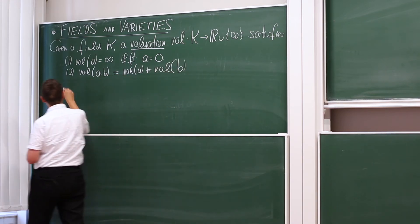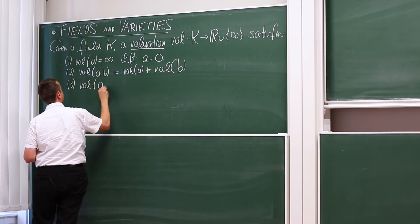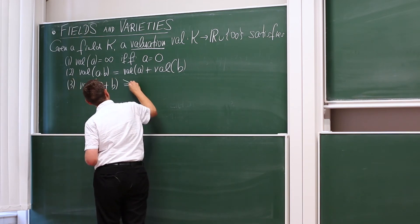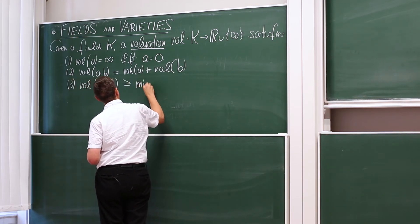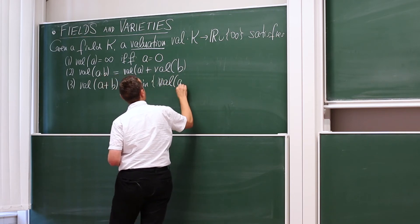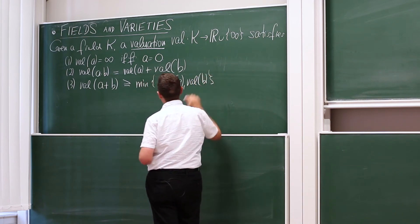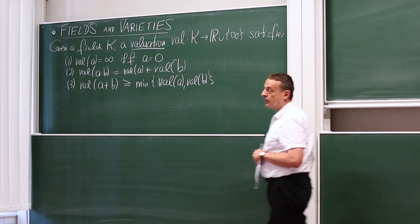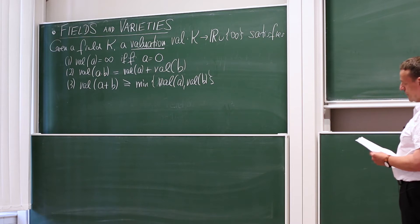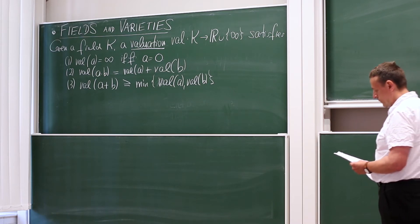And finally, for the sum, we have the following property. The valuation of A plus B, so A plus B are field elements, is greater or equal than the minimum of the valuation of A and the valuation of B. So for multiplication, we have an equality, but for addition, we only have an inequality. The valuation of A plus B is greater or equal to the minimum of those two.